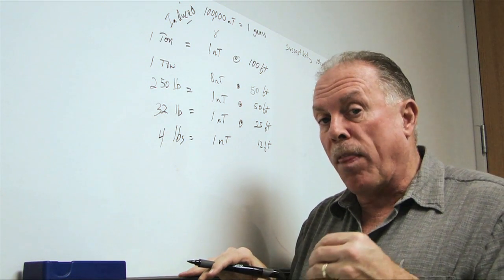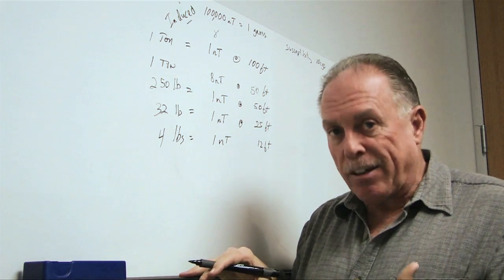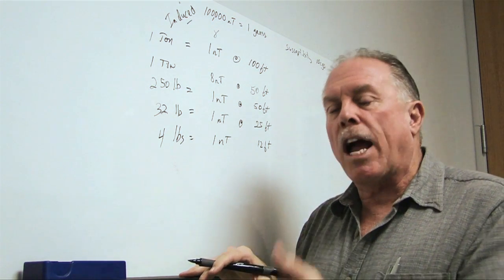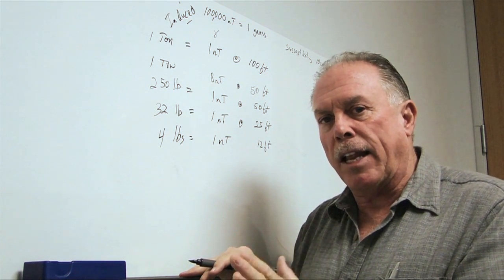Or, when they were actually formed in the foundry, in the steel-producing factory, when they cooled down, they picked up an alignment. And that's called permanent magnetic field.